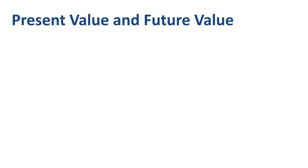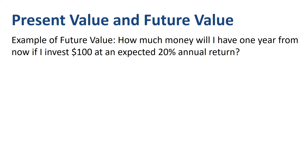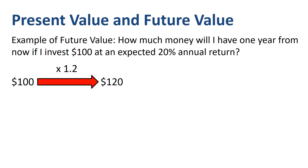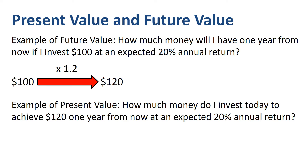Present value and future value are closely related concepts. An example of future value is: how much money will I have one year from now if I invest $100 at an expected 20% annual return? $100 multiplied by 1.2 is $120. An example of present value is: how much money do I invest today to achieve $120 one year from now at an expected 20% annual return? $120 divided by 1.2 is $100.